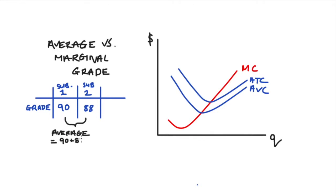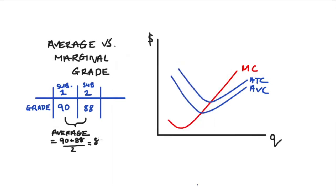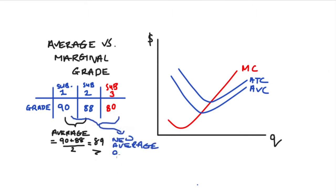Let's say that so far you've taken two different subjects and your grades were 90 and 88 respectively. The average of these is just the sum divided by 2: 90 plus 88 divided by 2, which is 89. Now let's say your marginal — your next grade — was lower than this average. Let's say your marginal course is economics and you got an 80.